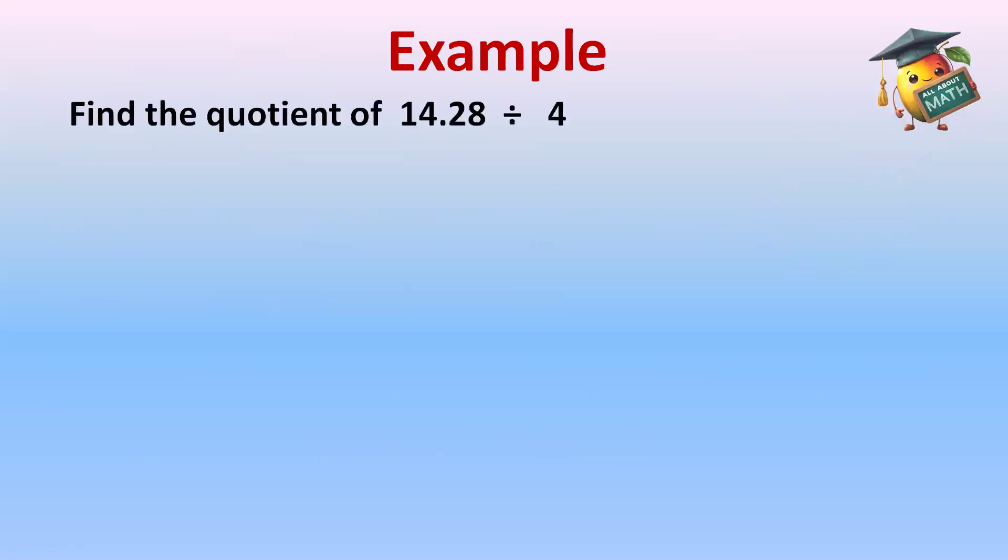For example, find the quotient of 14.28 divided by 4. First, we will make the division symbol. 14.28 will come inside as it is the dividend, and 4 is the divisor. 4 will come outside.